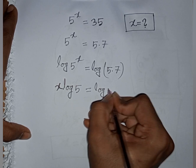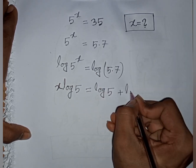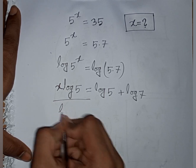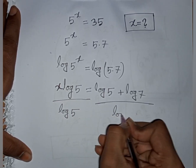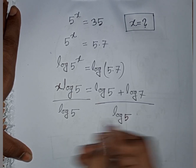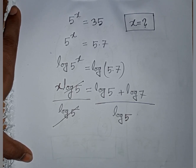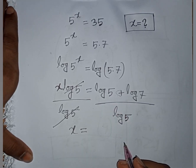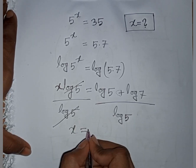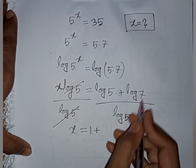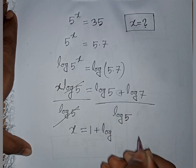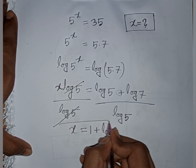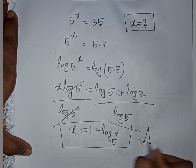log of 5 times 7 means log 5 plus log 7. We divide both sides by log 5. This log 5 cancels on the left, giving x equals log 5 over log 5 plus log 7 over log 5, that means 1 plus log base 5 of 7. This is the final answer.